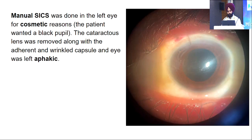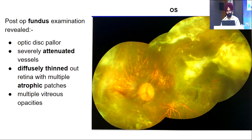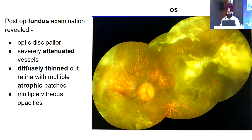A manual SICS was performed in the left eye for cosmetic reasons, as the patient wanted a black pupil. The cataractous lens was removed along with the adherent and wrinkled capsule, and the eye was left aphakic. Posterior fundus examination of the left eye revealed optic disc pallor, severely attenuated vessels, and a diffusely thinned-out retina with multiple atrophic patches, with the sclera visible through the atrophic choroid and retina.